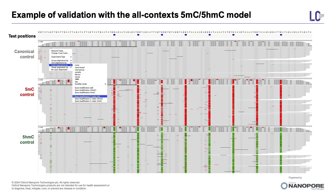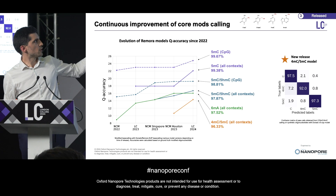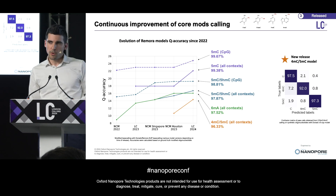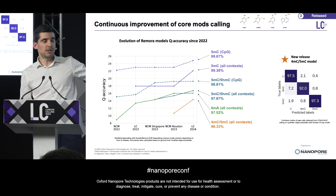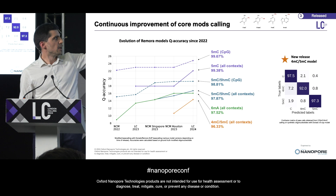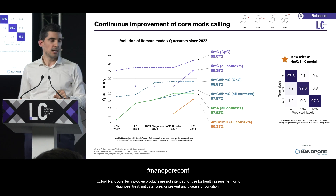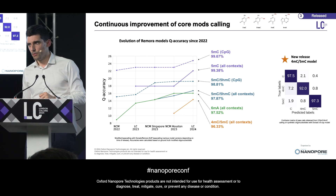Now I'm going to show you an update on our DNA modification framework, and in particular, the constant improvement in accuracy of our models over the years. Remora was released a little over two years ago, and we've managed to squeeze more accuracy for different modifications throughout that time. This year for London Calling, we've got a big boost in accuracy for 5mC in all contexts, which is now over 99% accuracy, as well as our 4mC/5mC model, which was previously a research model but is now at a level we feel confident releasing in Dorado — available from today.